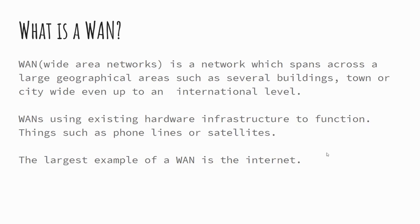With a WAN — a wide area network — the difference is it spans a larger geographical area, such as several buildings, a town, a city, or even at an international level. The infrastructure — all the hardware for that network — isn't necessarily owned or controlled by the people using it. The internet is the biggest example of a WAN. You don't own the servers or networks you're using; you're relying on someone else to maintain them, so when servers go down there's nothing you can do.